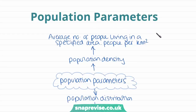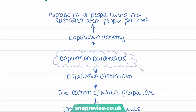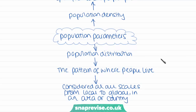Now we're going to look at population parameters, having just covered elements in the physical environment. The two main population parameters are population density and population distribution. Population density is the average number of people living in a specified area, typically measured in people per kilometre squared. Population distribution is the pattern of where people live, considered at all scales from local to global.